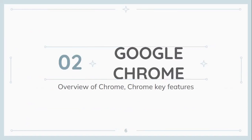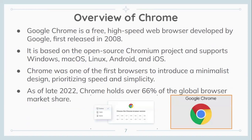Google Chrome: overview of Chrome and Chrome key features. Google Chrome is a free, high-speed web browser developed by Google, first released in 2008. It is based on the open-source Chromium project. It supports Windows, Mac OS, Linux, Android, and iOS. Chrome was one of the first web browsers to introduce a minimalist design, prioritizing speed and simplicity. As of late 2022, Chrome holds 66% of the global market share.